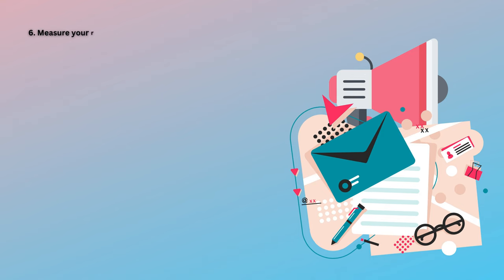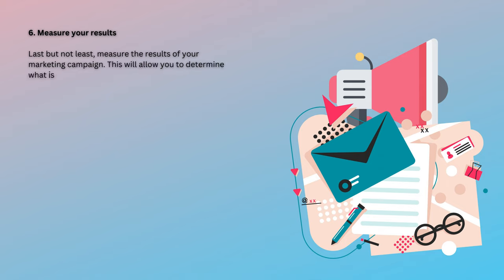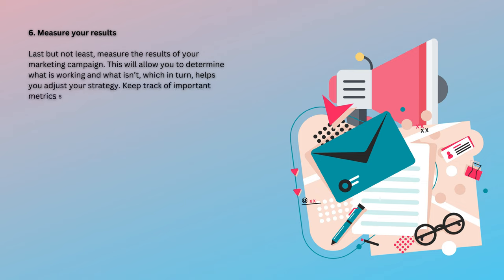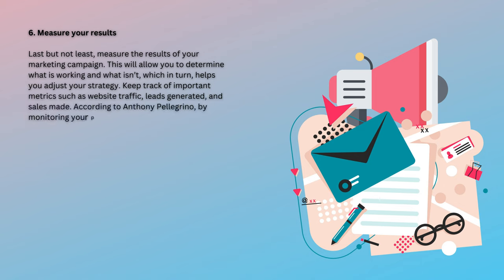Tip 6: Measure Your Results. Last but not least, measure the results of your marketing campaign. This will allow you to determine what is working and what isn't, which in turn helps you adjust your strategy. Keep track of important metrics such as website traffic, leads generated, and sales made. According to Anthony Pellegrino, by monitoring your progress, you can ensure that your marketing efforts are as effective as possible.